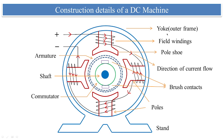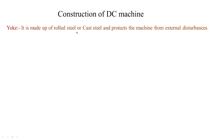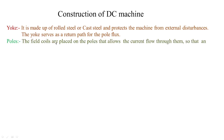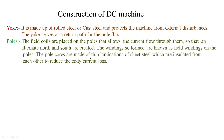The construction of a DC machine involves: first, the yoke — made of rolled steel or cast steel — which protects the machine from external disturbances and serves as a return path for the pole flux. Next, poles: field coils are placed on the poles, allowing current flow to create alternating north and south poles. The windings on the poles are known as field windings. The pole cores are made of thin laminations of sheet steel insulated from each other to reduce eddy current loss.